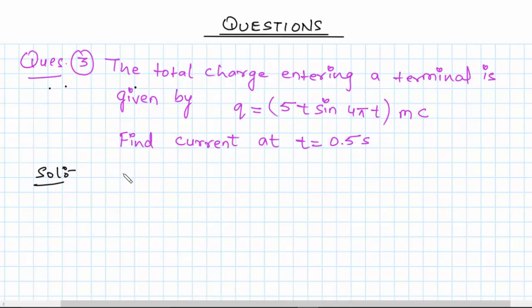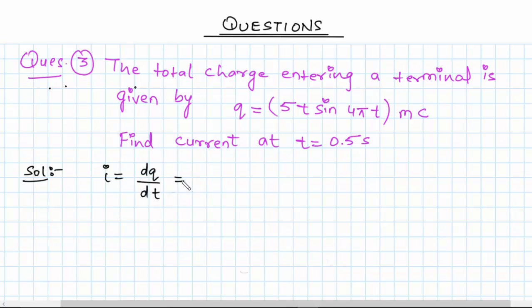The total charge entering a terminal is given by q equals 5 times t times sine 4 pi t, and it is in micro coulombs. We need to find the current at t equals 0.5 seconds. We know that current is given by change in net positive charge over time, that is dq over dt.